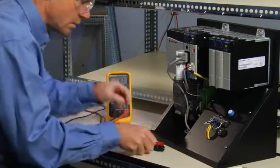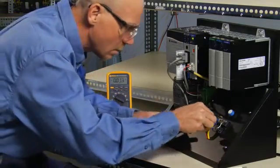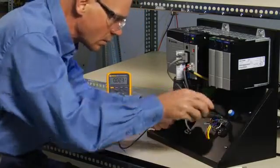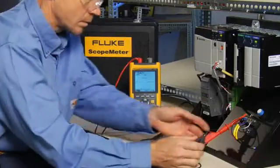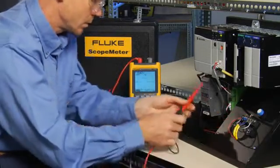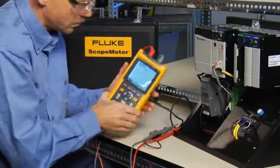A DMM can show precise amplitude and time measurements and will let you know when a switch fails to open or close. But when it comes to those subtle intermittent events, the Fluke Scope Meter will give you the details you need to diagnose the problem.